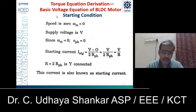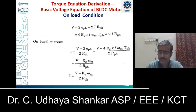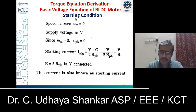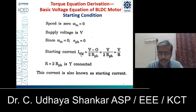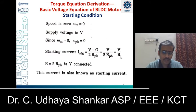We will discuss the voltage equation of the BLDC motor for three different conditions: starting condition, no-load condition, and on-load condition. At starting condition, as you all know, the speed is zero, so ω_m = 0. Since back EMF is proportional to speed, E_phase = 0 as well. Therefore the starting current I_stg = (V − 0) / (2·R_phase) = V / (2·R_phase).